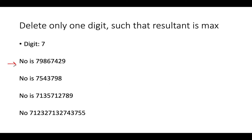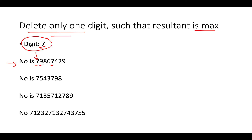Let's hypothetically assume the input number is 79867429. We are only allowed to delete one digit, and the input digit is 7. We need to maximize the result after deletion. Either you can remove the first 7 or the second 7. Let's iterate through the input string. At the first 7, the immediate next value is greater in nature. As a result, if we delete this 7, the value will be maximized. So as soon as we see an immediate next value greater than the current digit to be deleted, we delete that digit.